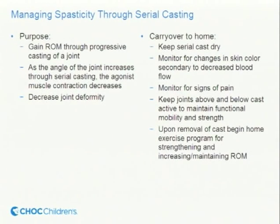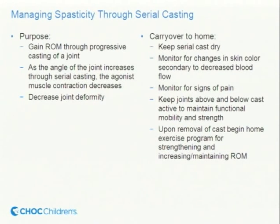For serial casting, you want to gain range of motion through progressive casting of the joint. Casting may be done one to two times per week depending on the individual, to help gain range. At home, make sure the cast is dry, monitor changes in skin color, watch for signs of pain, and make sure to stay active even while casted. After removal of the cast, start a home program.